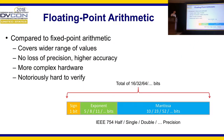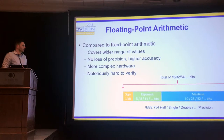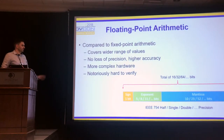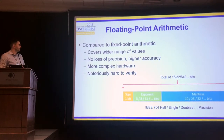Looking into the fixed point arithmetic — what is the floating point? It just gives us more options in terms of the range of values, so better precision and higher accuracy. But on the other side, the design is more complex and verifying such a design can be a nightmare. Down below you see an example of the IEEE 754 standard itself, defining how the number description looks like. We have different precisions and different areas of the number: the sign, the exponent, and the mantissa, which together define the number.